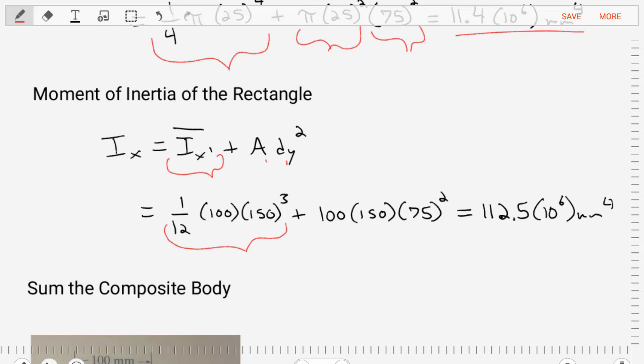We're going to plug that right in. Then the area is going to be the base times the height of the rectangle. And then the distance, we can pull that directly from our diagram so that the moment of inertia of the rectangle on the x-axis is equal to 112.5 times 10 to the 6 millimeters to the power 4.